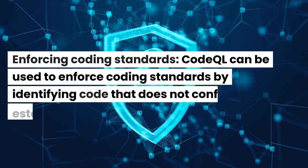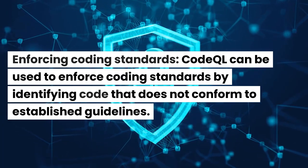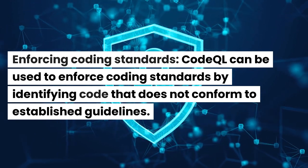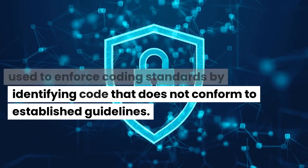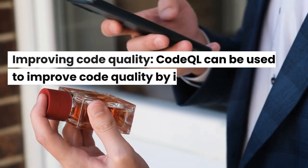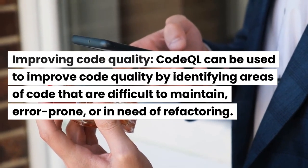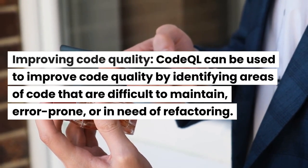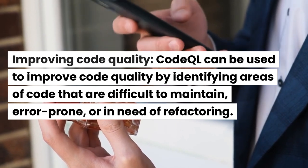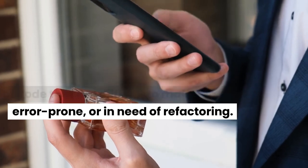Enforcing coding standards: CodeQL can be used to enforce coding standards by identifying code that does not conform to established guidelines. Improving code quality: CodeQL can be used to improve code quality by identifying areas of code that are difficult to maintain, error-prone, or in need of refactoring.